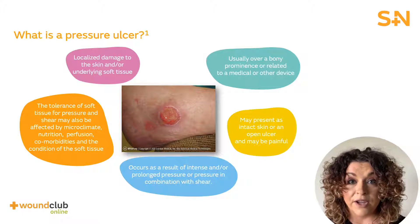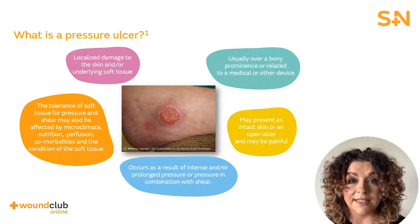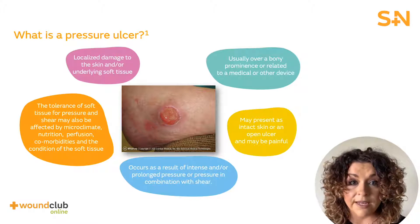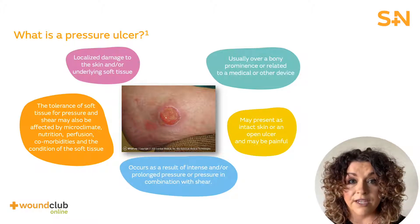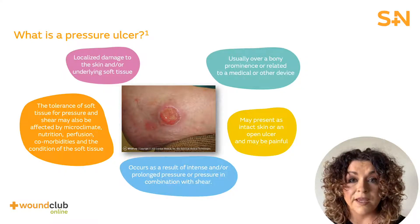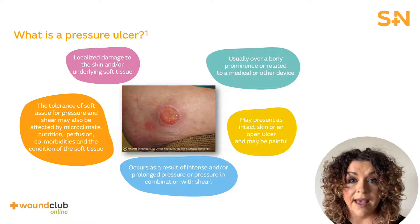Therefore, a pressure ulcer is defined as localised damage to the skin and or the underlying tissue. The ulcer is usually over a bony prominence, for example, heels or elbows. There may be associated pain with the ulcer. The overarching cause will be as a result of intense or prolonged pressure to the area and can be in combination with a shearing force.